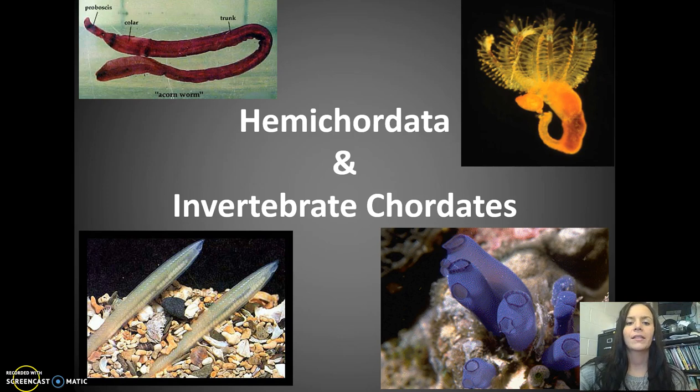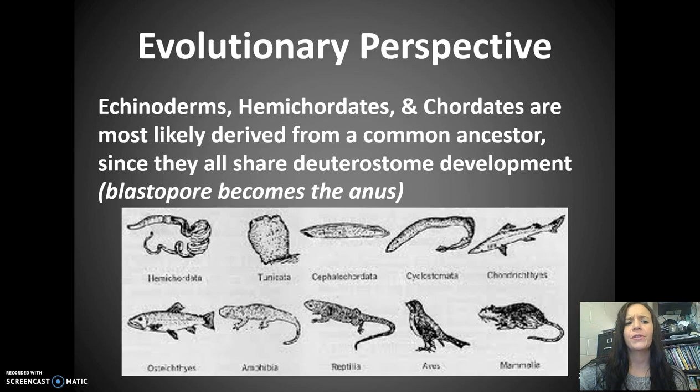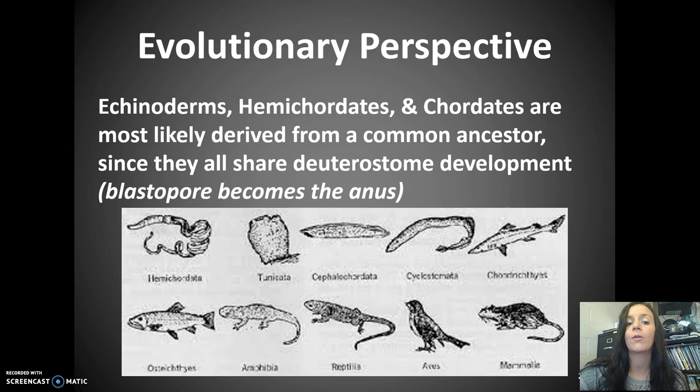Hi guys, these are your hemichordata and invertebrate chordate notes. This is the final set of notes we're going to do before we move into actual chordates. Let's start by looking at it from an evolutionary perspective. You need to understand that echinoderms, hemichordates, and chordates are all most likely derived from a common ancestor, especially since they all share deuterostome development — when the blastopore becomes the anus.